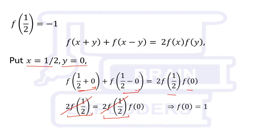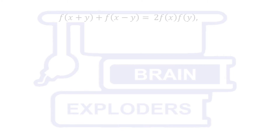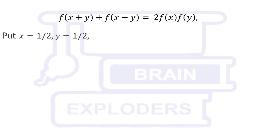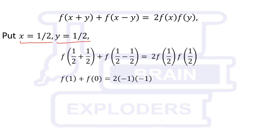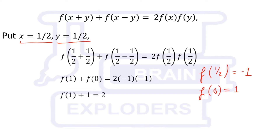Now if we put x = 1/2 and y = 1/2, we get f(1) + f(0) = 2·(-1)·(-1) = 2. Since f(0) = 1, putting that in gives f(1) = 1.